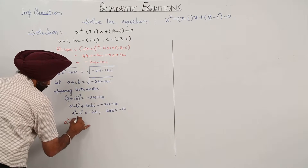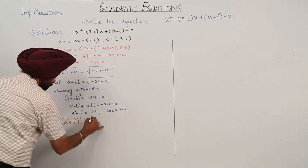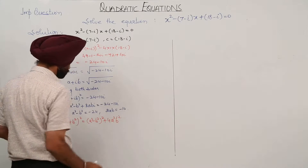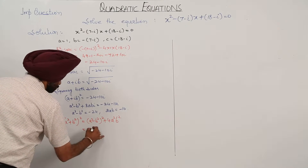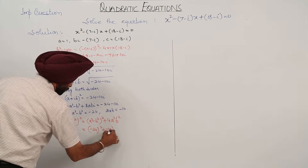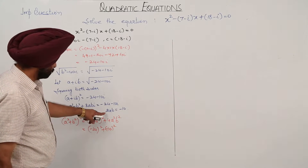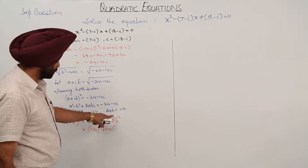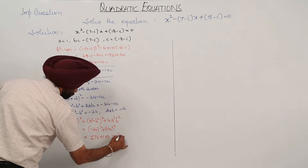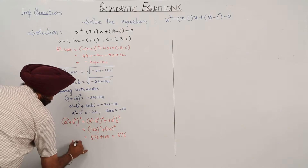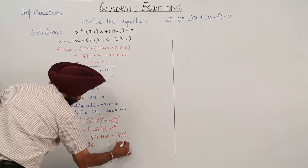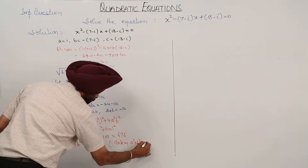Now, (a² + b²)² = (a² - b²)² + 4a²b². This equals (-24)² + (-10)² = 576 + 100 = 676. Therefore a² + b² = 26, taking the positive root since a² + b² > 0.